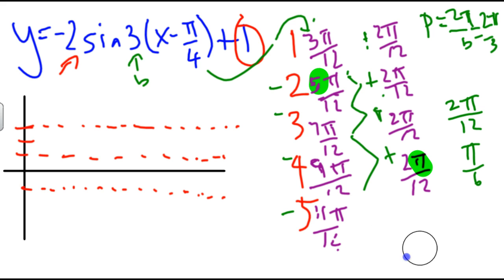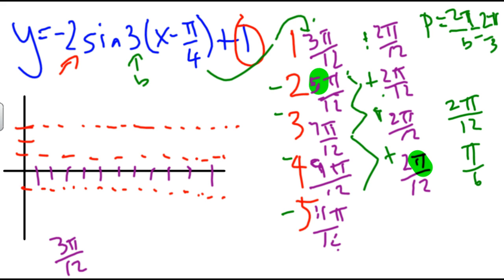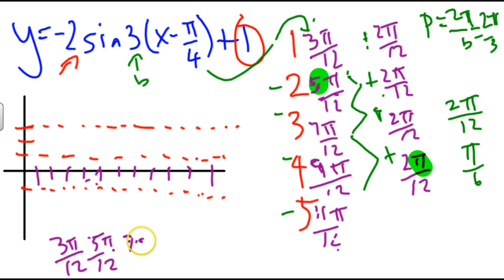My five points to create my cycle will be located in terms of pi over 12. My first point is at 3 pi over 12 on the x-axis. The next point is at 5 pi over 12, then 7 pi over 12, then 9 pi over 12, and finally 11 pi over 12.